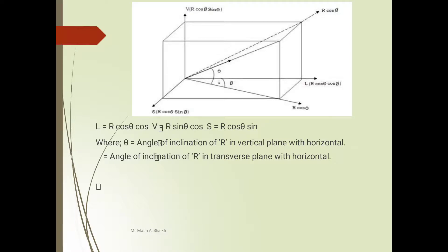This one is the equation of vertical line: V is equal to R cos φ sin θ. The equation for side force or side draft is R cos θ sin φ. Now theta is angle of inclination, the angle made between R cos φ and R cos θ. Theta is the angle of inclination of R in vertical plane with horizontal. Phi is angle of inclination of R in transverse plane with horizontal.